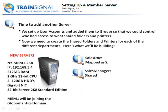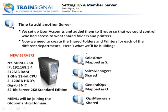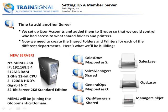We're also going to be building some shared folders and mapping them for specific groups. We'll have one for sales documents, and a sales managers folder to hide some super-secret documents not everyone needs to see. Same thing with ops — a general ops folder mapped as the O drive for easier access, and a separate folder for ops managers. And of course, we're going to be creating three printers: two laser printers and one inkjet.